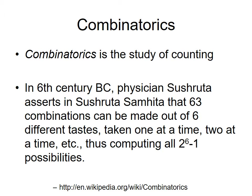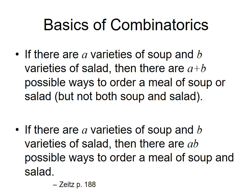Combinatorics is the study of counting. Way back in 6th century BC, physician Sushruta asserts in a text that 63 combinations can be made out of six different tastes — taking one at a time, two at a time, etc. — going through all six minus one possibilities. That was kind of the origin of this field.